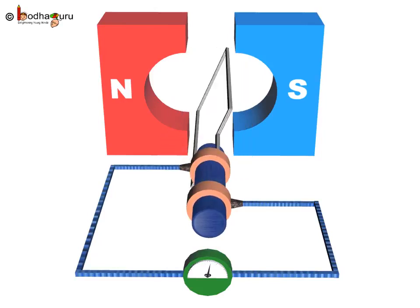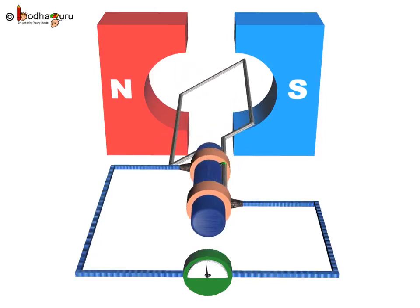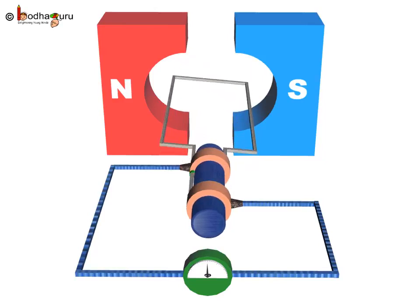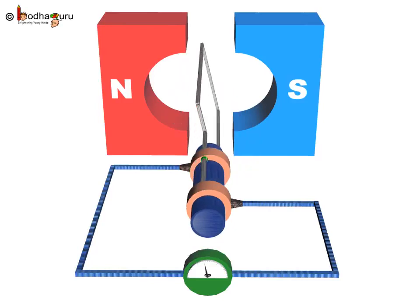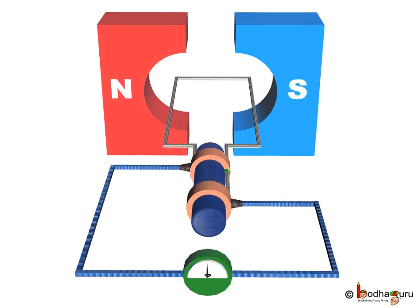Electricity is generated by rotating a coil in the magnetic field. Thus in an electric generator, mechanical energy is used to rotate the coil and mechanical energy gets converted to electrical energy.